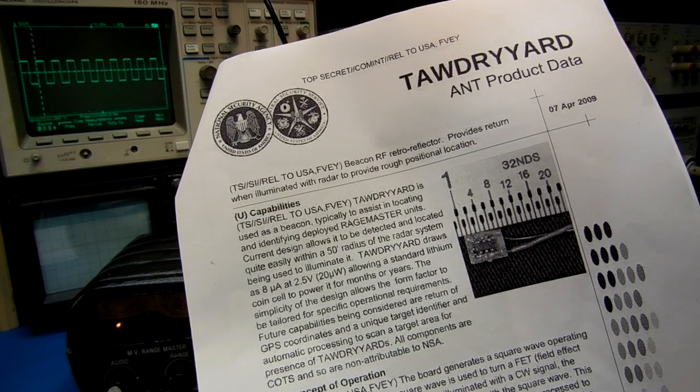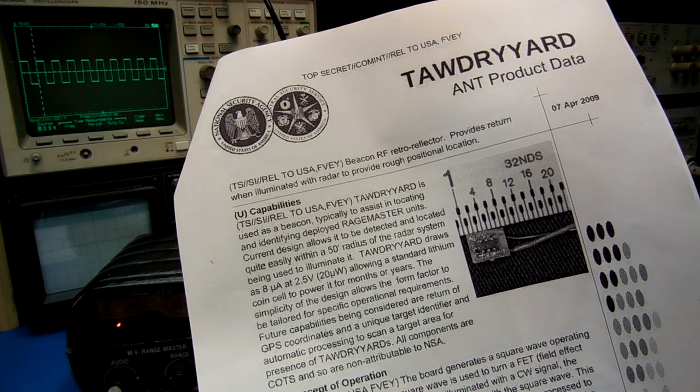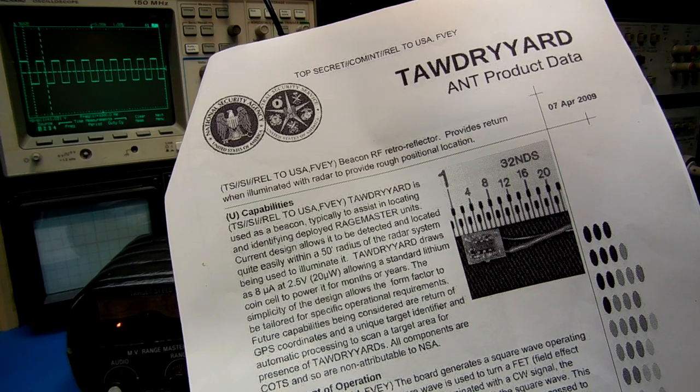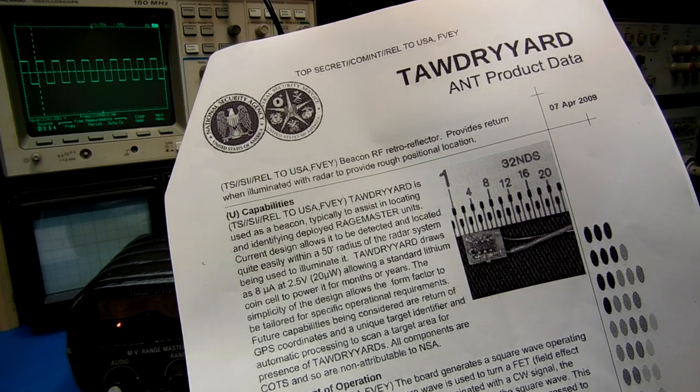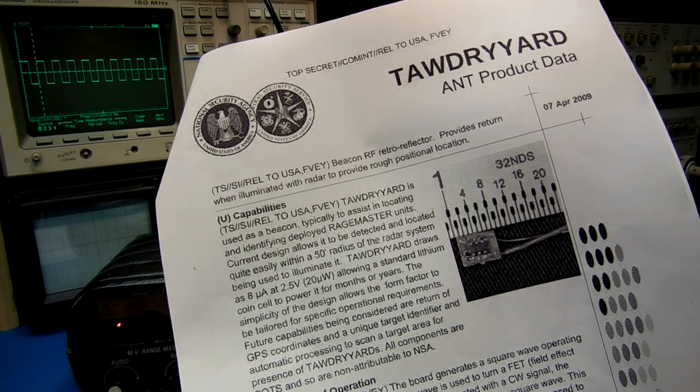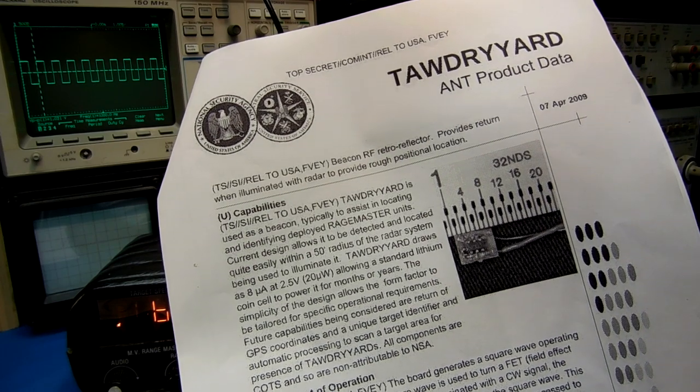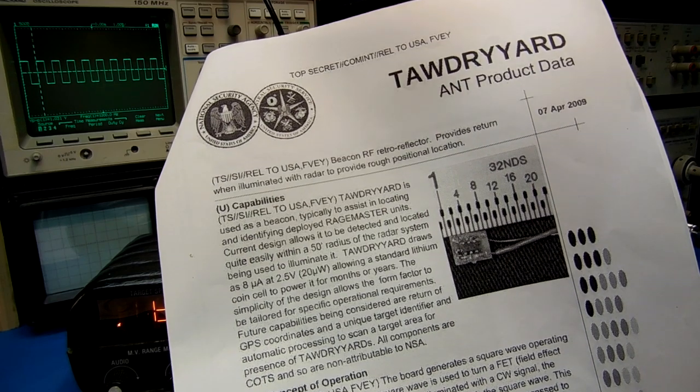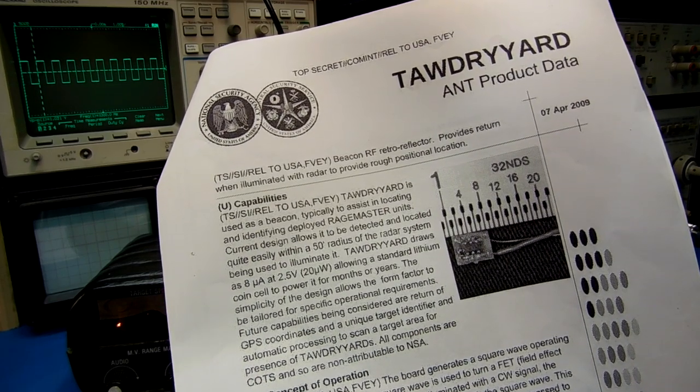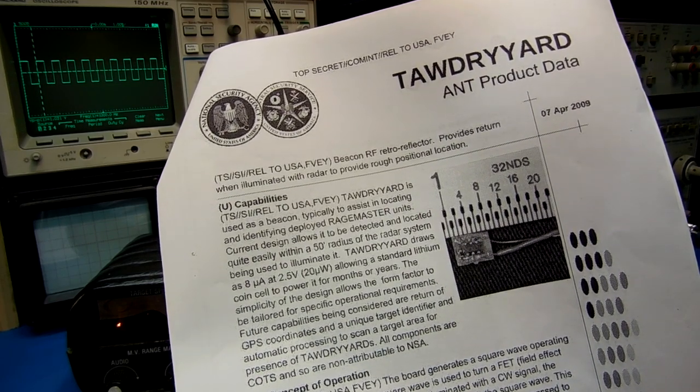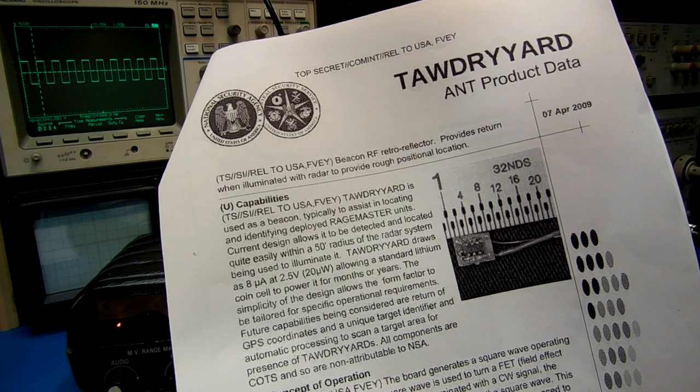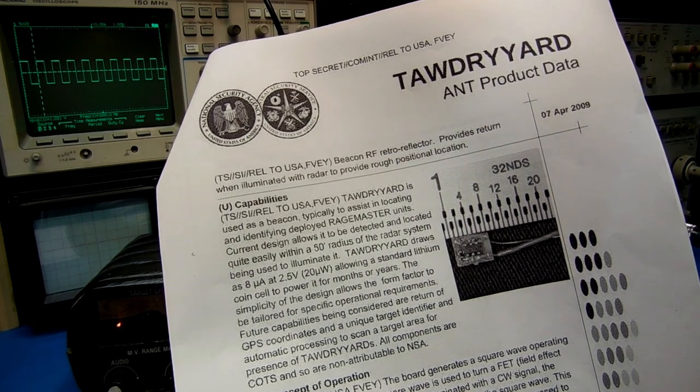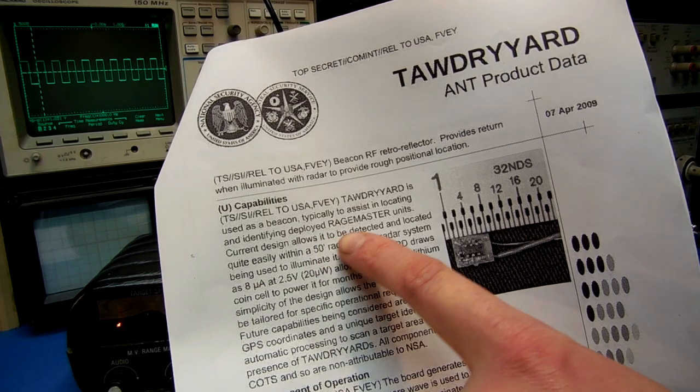The Tawdry Yard is the simplest of these devices. It just consists basically of a square wave clock oscillator and a microwave FET which generates the backscattered signal. The Tawdry Yard device is used for location or as a tracking beacon.